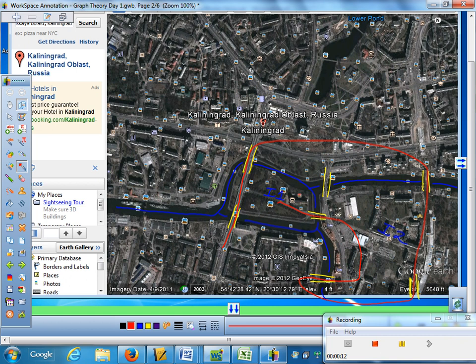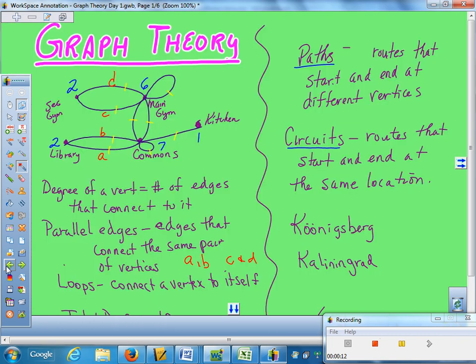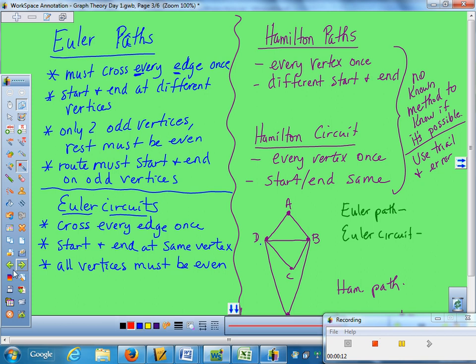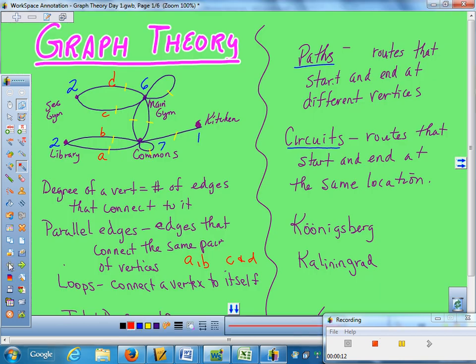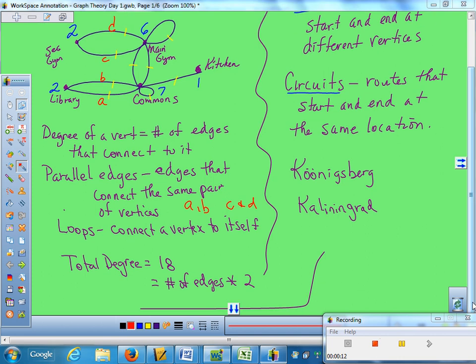Euler got to wondering if there was some way to know whether it's possible or not. Walking these bridges took a lot of time and effort, so he wanted to find a way to model this situation. So he created a graph with vertices and edges to represent this situation.